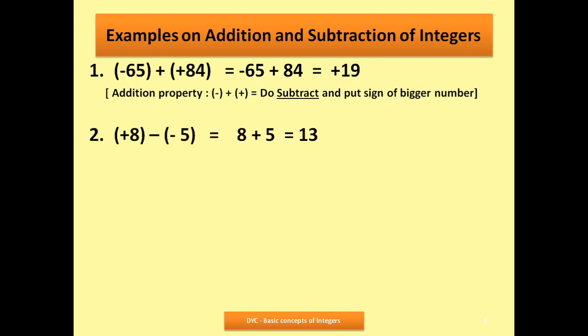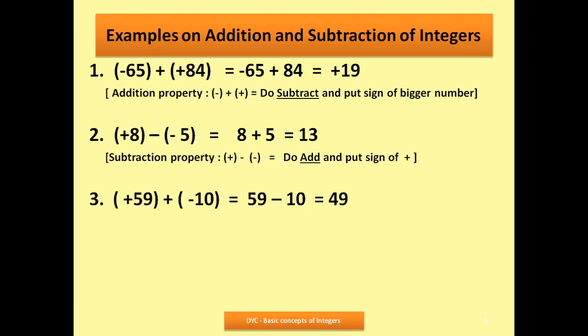Second example: plus 8 minus minus 5. Minus times minus is plus — simply 8 plus 5 which equals 13. Here I used the subtraction property: minus minus becomes addition and we put the plus sign. If there is no sign written with the integer, it means plus — so your answer will be correct without writing it.